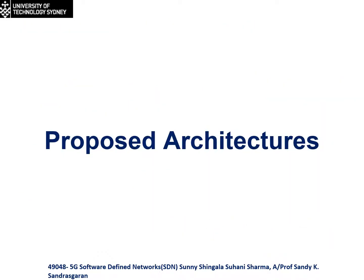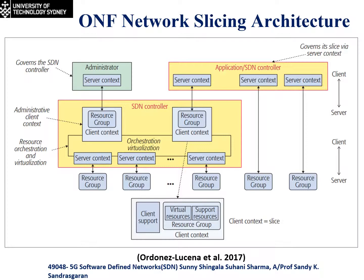Now we will move towards proposed architectures of SDN in 5G. ONF stands for Open Networking Foundation, a non-profit operator-led organization that serves as the umbrella for projects building SDN solutions. The SDN architecture provided by ONF comprises an intermediate control plane that dynamically configures and abstracts the underlying forwarding plane resources to deliver tailored services to clients in the application plane. This is well aligned with the requirements of 5G network slicing, which needs to satisfy a wide range of service demands in an agile and cost-effective manner.